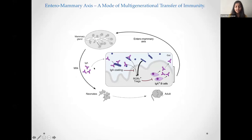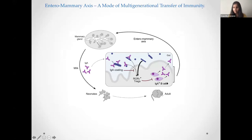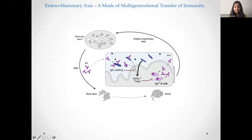To summarize: mothers transfer factors such as IgA in their milk to neonates in the first week of life, leading to differential coating of microbes in the intestine. When the mice are adults, this IgA coating influences levels of RORγ Tregs in the intestine, which in turn regulate IgA-positive plasma cells in a double negative feedback loop. When a female becomes pregnant, these IgA-positive plasma cells expand in the intestine and migrate to the mammary gland via the entero-mammary axis, leading to differential IgA levels in milk. This cycle continues for multiple generations — up to four generations observed so far.